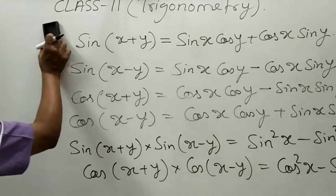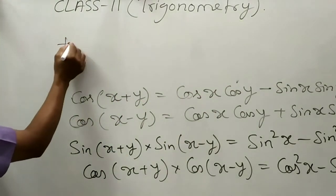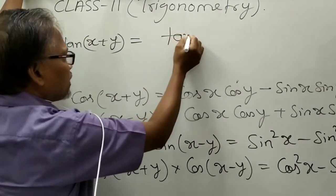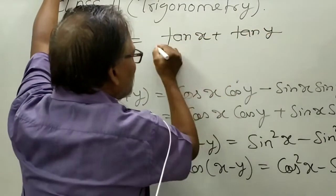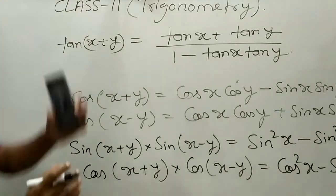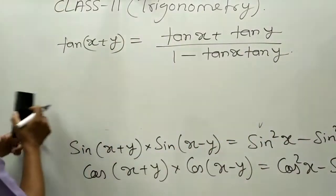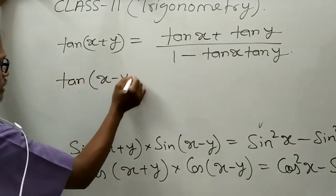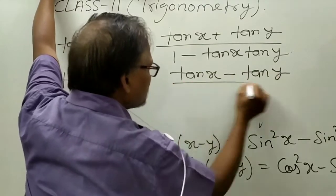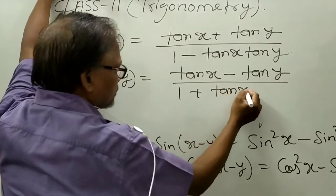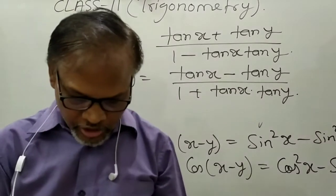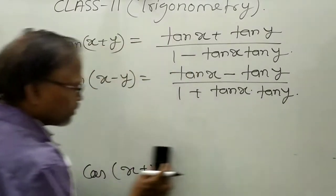Some more formulae involve tan. Tan(x + y) equals tan x plus tan y, whole upon 1 minus tan x times tan y. This is the formula for tan(x + y). For tan(x − y), the plus in the numerator changes to minus and the minus in the denominator changes to plus: (tan x − tan y) / (1 + tan x tan y). For cot, there is no need to memorise separately — just convert cot to tan.